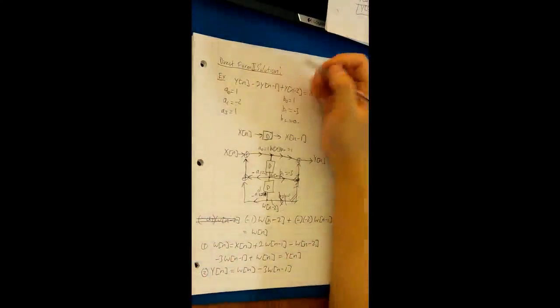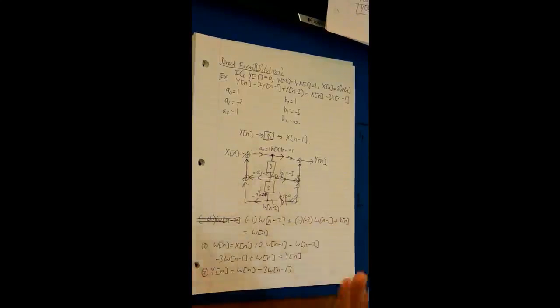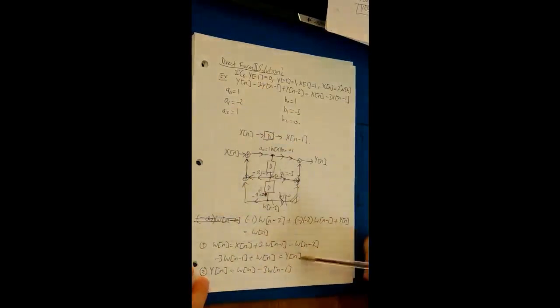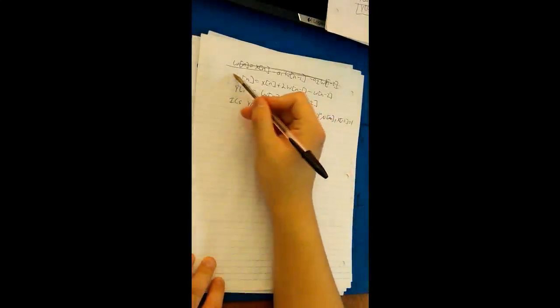From last time, the initial conditions were given: Y of negative 1 equals 0, Y of negative 2 equals 1, X of negative 1 equals 1, and X of N equals 2 to the power of N times mu of N. These are all your initial conditions and equations. The strategy now is to take the initial conditions and transfer them to W of N, because W of N is something we just defined through direct form 2. We'll use these two equations to create the equations for W of N.